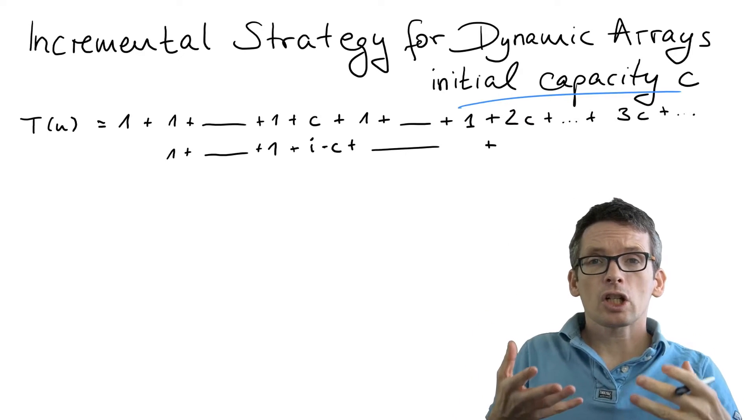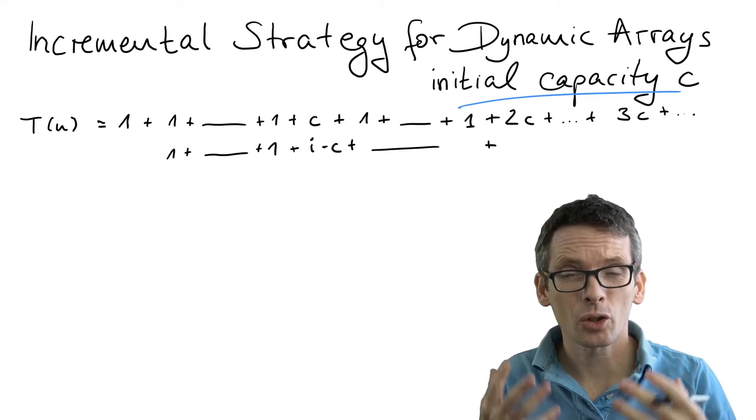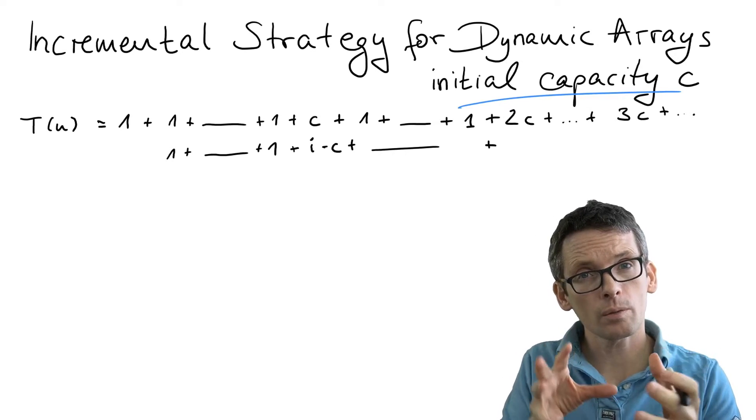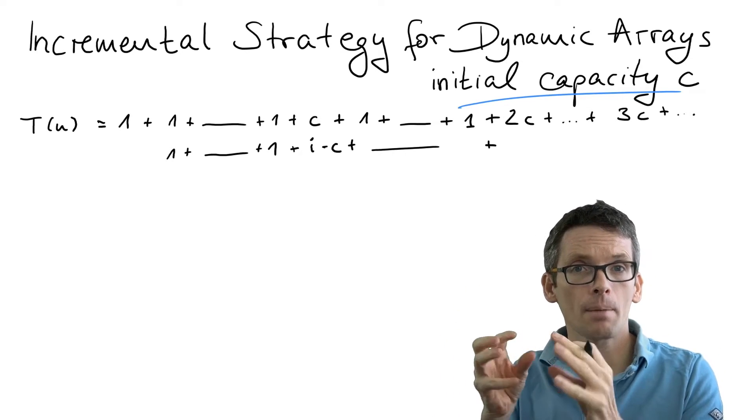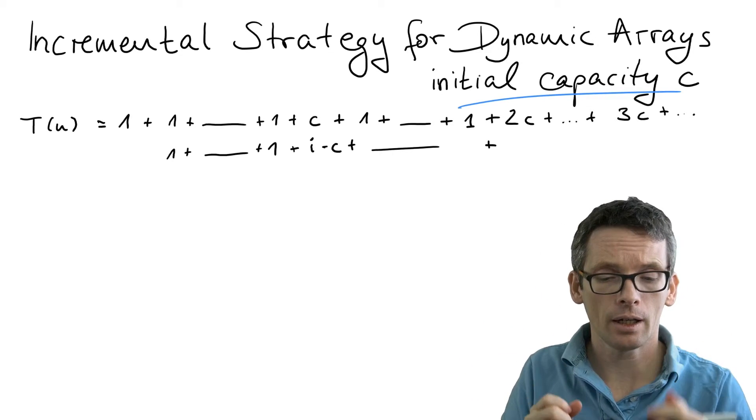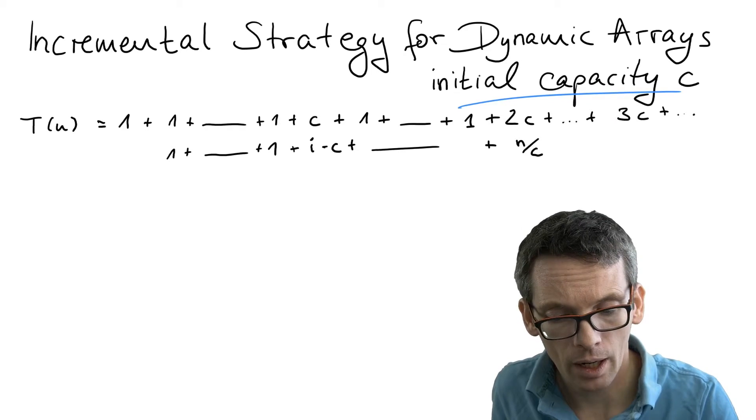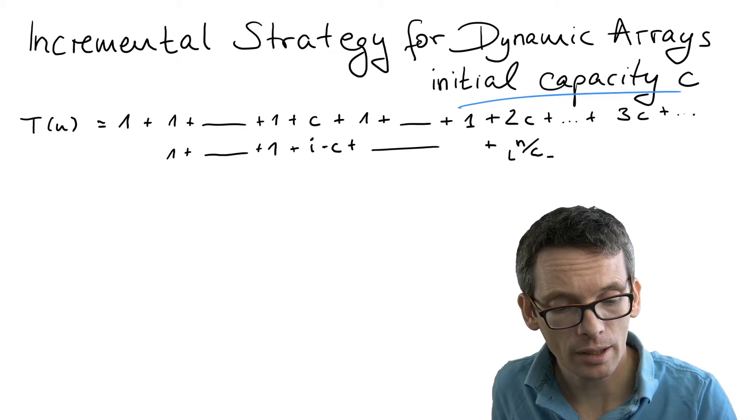Now the question is, what is the last such term? The last such term is a term such that i times c is just below n, and then i plus 1 times c would be above n. And the last such term there we have as i equals n divided by c, rounded down, because that's the last i such that we stay below n.